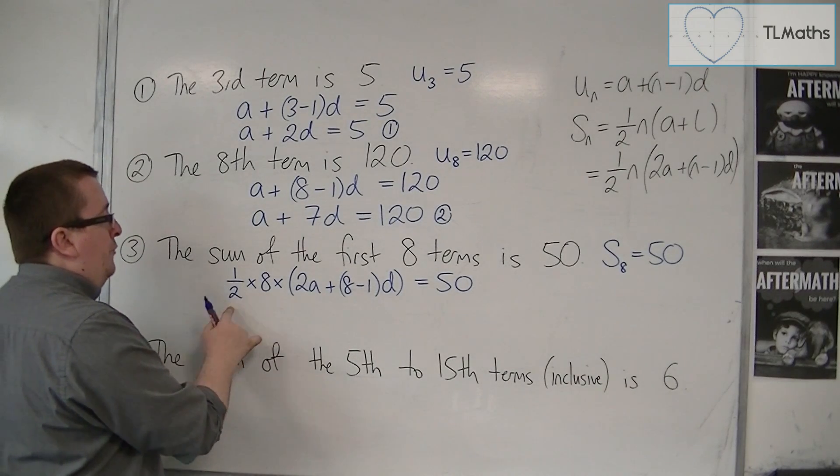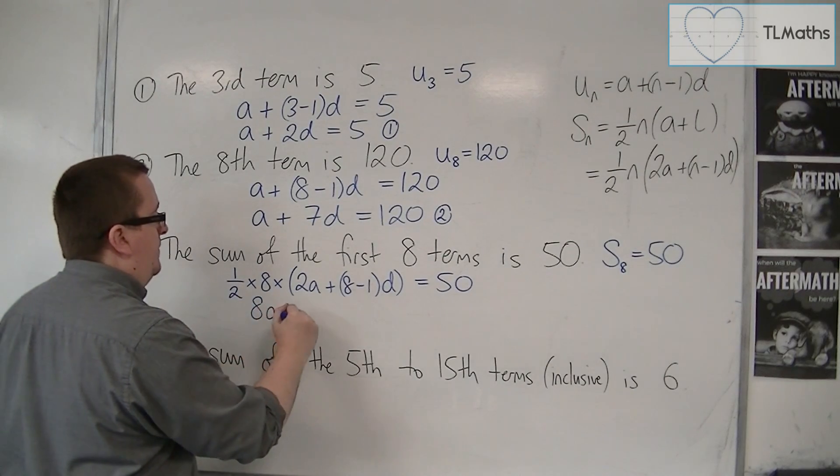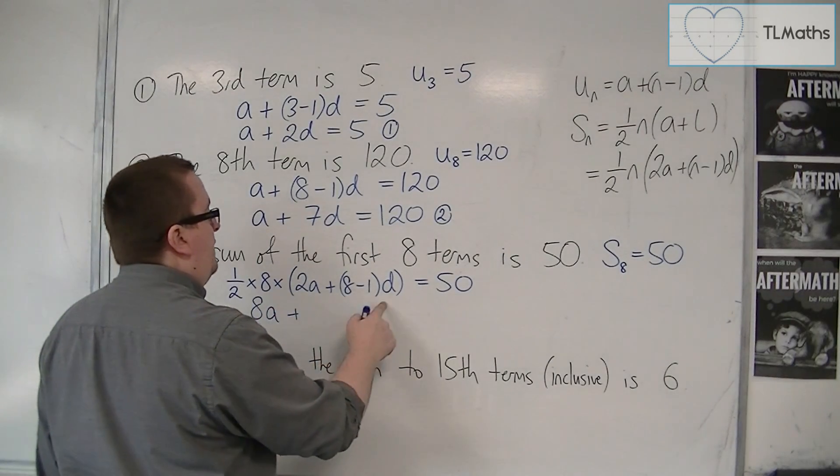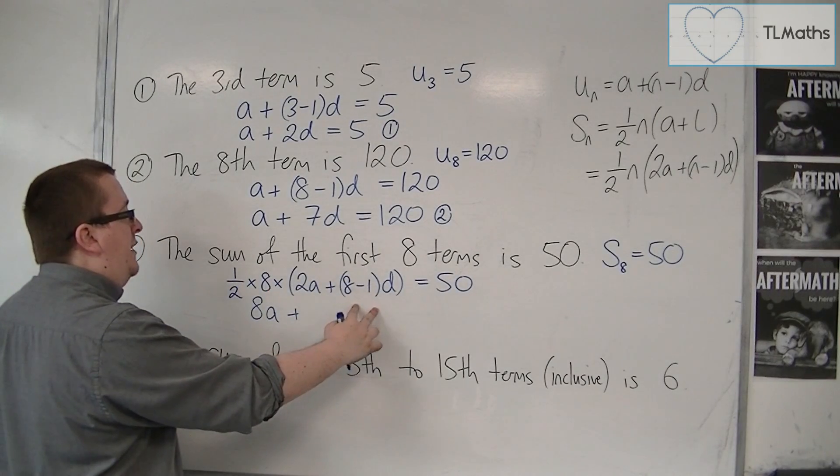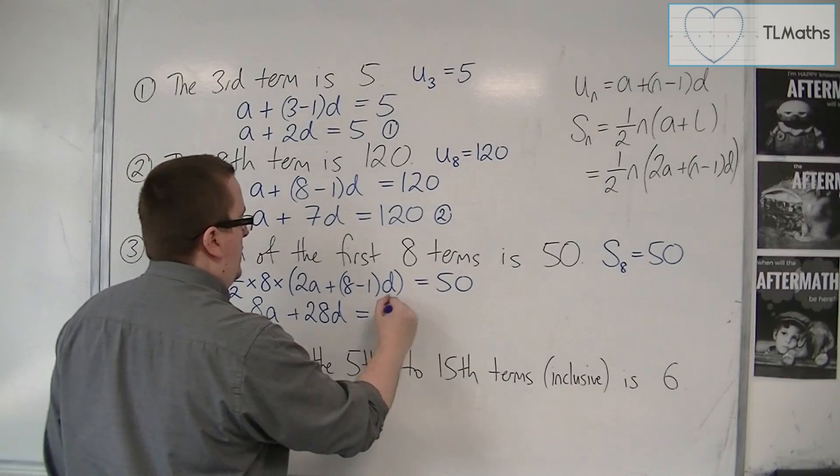Half of 8 is 4, 4 lots of 2a is 8a, so I have 8a plus, I've got 7D there, so 4 times 7D is 28D, is equal to 50.